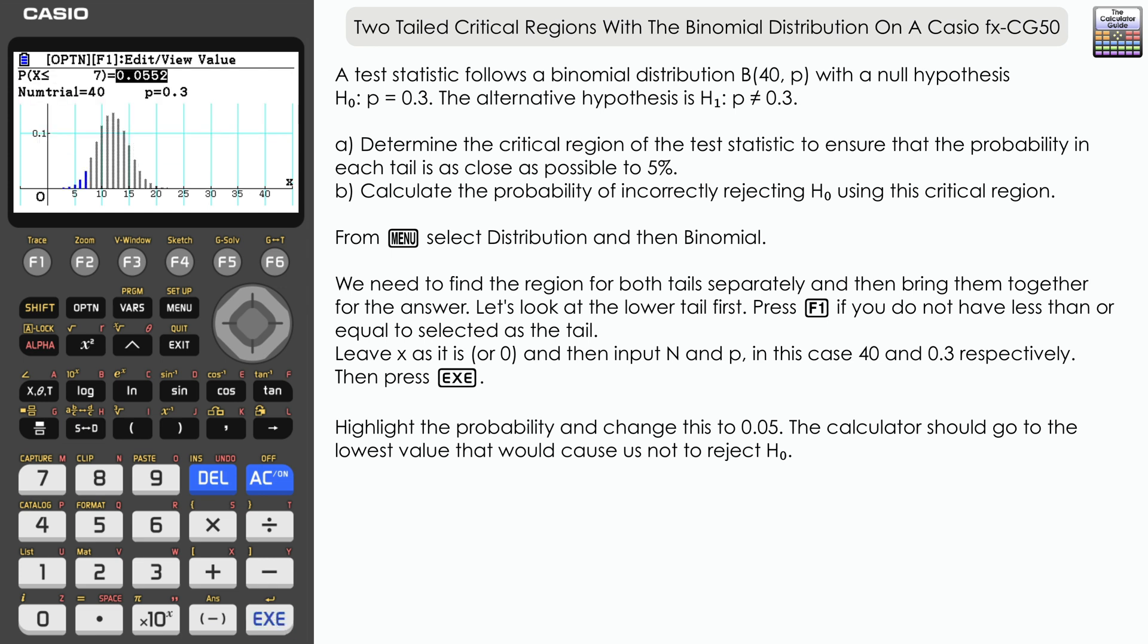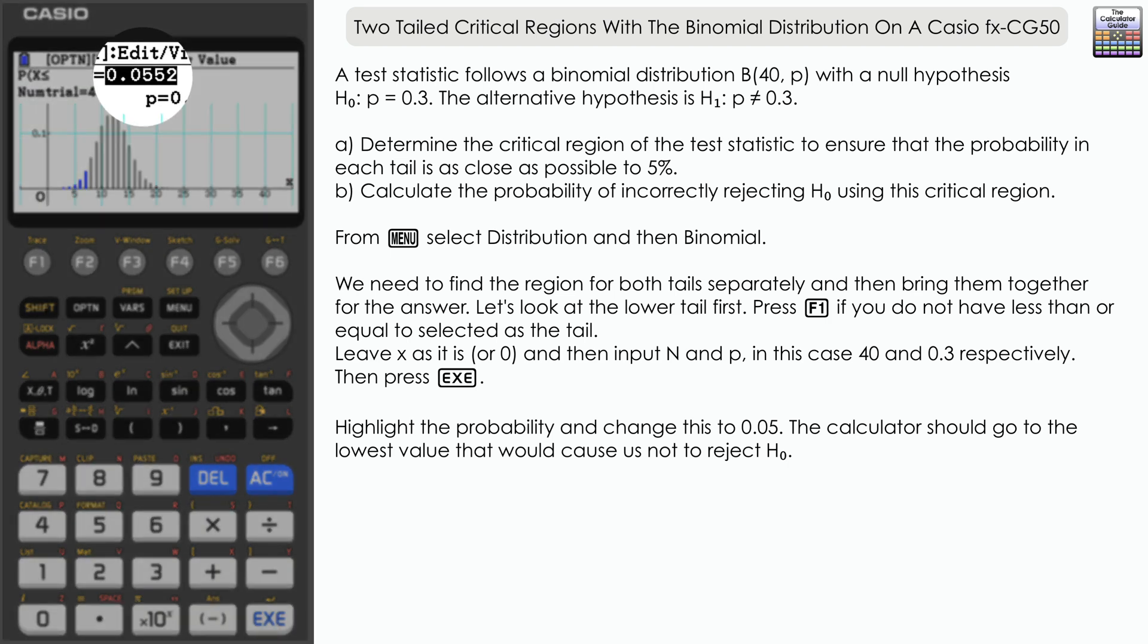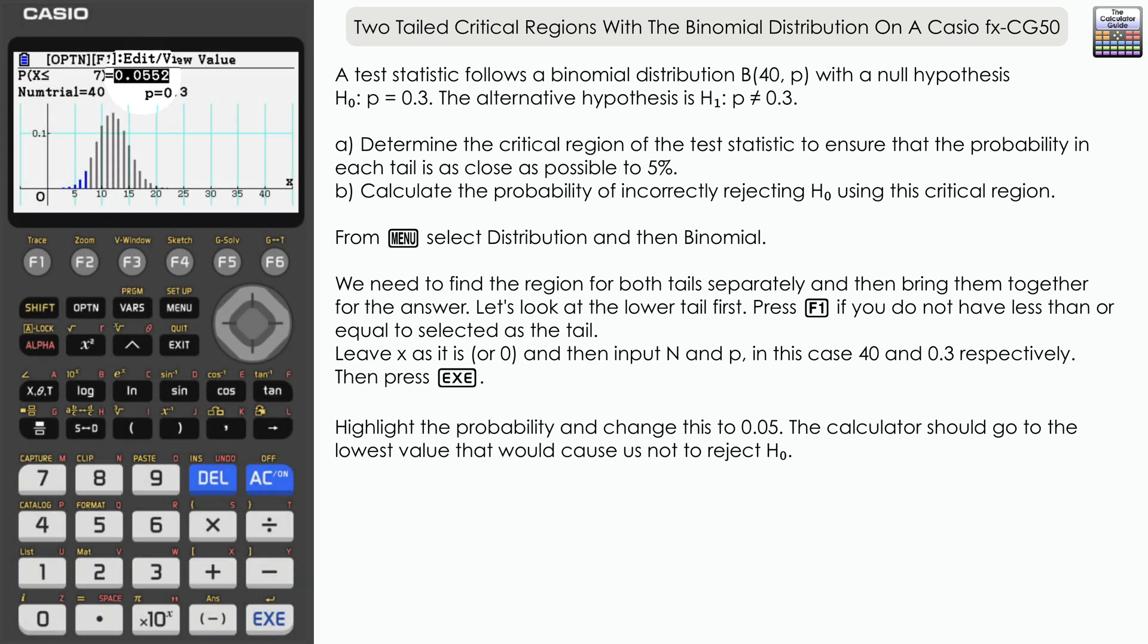If you've seen the previous video on one-tail tests, you'll know the calculator goes to the closest value within the accepted region—that is, outside the critical region. Looking at the probability, it's 0.0552. That's too large; that's not the x value we want.